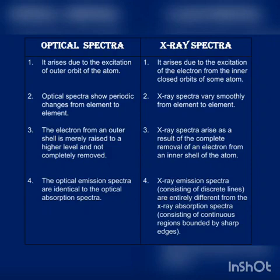Third point: in optical spectra, the electron from an outer shell is merely raised to a higher energy level and not completely removed. In X-ray spectra, they arise as a result of the complete removal of an electron from an inner shell of the atom. Fourth point: optical emission spectra are identical to optical absorption spectra, whereas X-ray emission spectra are entirely different from X-ray absorption spectra. I hope you understood all the points. Thank you.